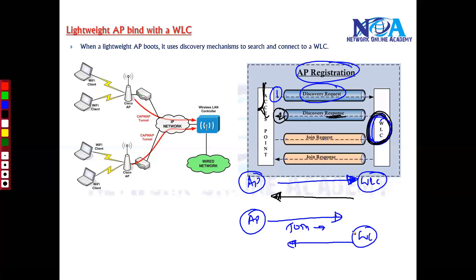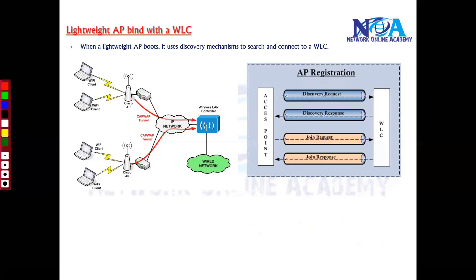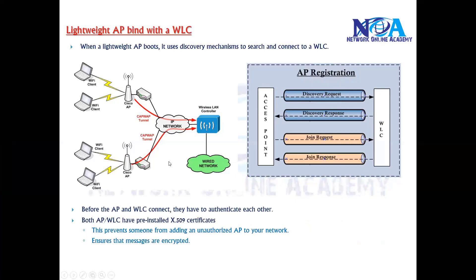In the Join Response, the WLC validates the access point. There is authentication happening at the back end, and the WLC sends back a join response confirming the connection. The validation is done on both sides — the access point and the WLC both undergo an authentication process.